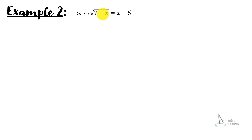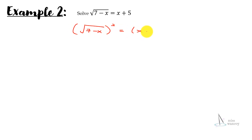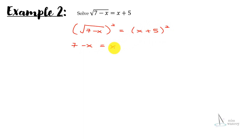Again, we square both sides: the square root of 7 minus x squared equals x plus 5 squared. Squaring removes the square root, giving 7 minus x. And x plus 5 squared expands to x squared plus 10x plus 25.